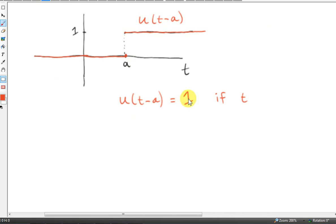So u(t-a) equals 1 if the argument of the function t-a is greater than 0, which is the same thing as saying that t is greater than a. And u(t-a) is 0 if the argument t-a is less than 0, which is the same thing as saying t is less than a.